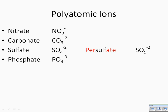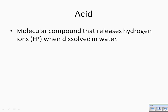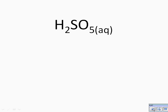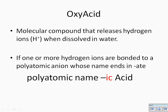So how do we go about naming our acid if the polyatomic is persulfate? Our acid — review — is a molecular compound that releases hydrogen ions when dissolved in water. This is an oxyacid because it has oxygen in the polyatomic, and it does end in the suffix -ate. We know from prior rules that if it ends in -ate, we are going to take the polyatomic name and add the ending -ic.